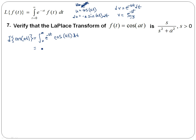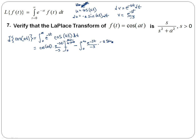Applying u·v, that gives me cosine(at) times e to the negative st divided by negative s, evaluated from 0 to the limit as t goes to infinity, and then minus the integral from 0 to infinity of v du, which is e to the negative st divided by negative s times negative a·sin(at) dt.